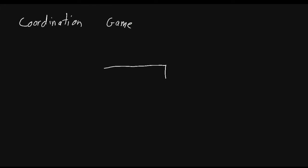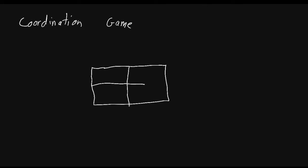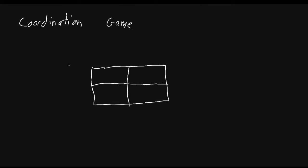The story behind this game is that we're in the time before cell phones, and two people — two decision makers — decided they were going to go out, but they forgot where they were going to meet up. This is sometimes called the meetup game. The players can decide where they go; since they don't have cell phones, they can't call one another. They can either choose to go to the concert or the sporting event, and both players face the same decision.